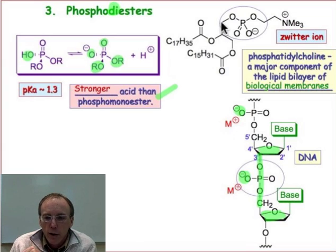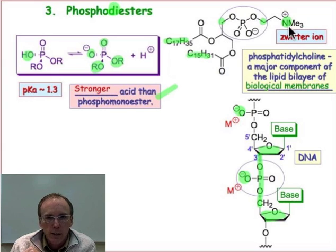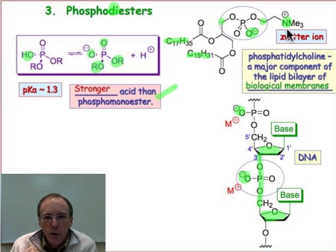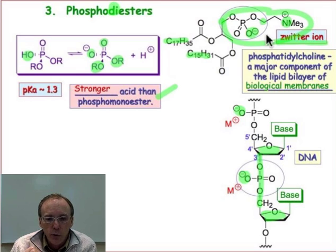Another example of where phosphodiester linkage shows up in biological chemistry is in lipid bilayers. For example, phosphatidylcholine has two different organic constituents shown here. One is attached to very long chain fatty acids that are hydrophobic, and the other side is very polar — it contains a trialkyl ammonium group. So overall, the negative charge on the phosphodiester is offset by the positive charge on the trialkyl group, meaning it's a zwitterionic entity. This part of the molecule is very hydrophilic compared to the very hydrophobic portion.